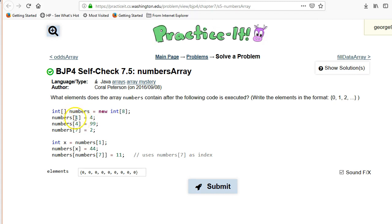So it's going to set numbers 1. So that's not the first element, because that's actually number 0. But rather, numbers 1 here is going to be 4. And numbers 4, 0, 1, 2, 3, 4. So that's actually the 5th element, becomes 99.